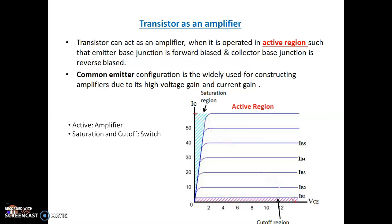For common emitter — and not only common emitter, but all configurations of transistors — there are input characteristics and output characteristics. Normally we use the common emitter configuration of transistors for amplification. The output characteristics, that is output voltage versus output current by keeping input current constant, that graph is shown here. This graph has three regions: one is saturation, second one is active, and third one is cutoff.